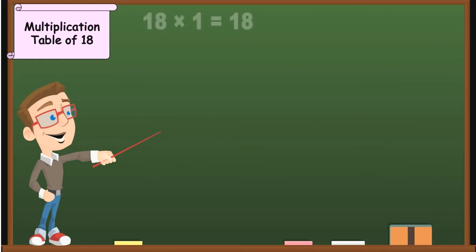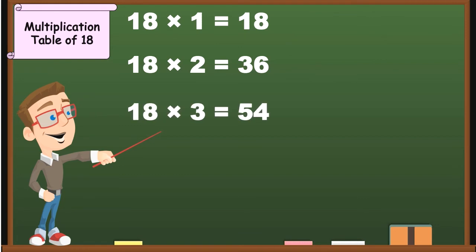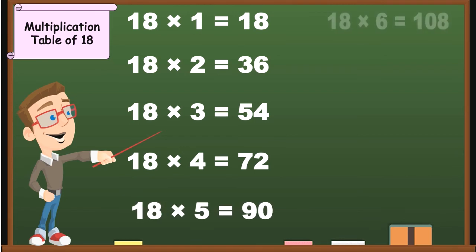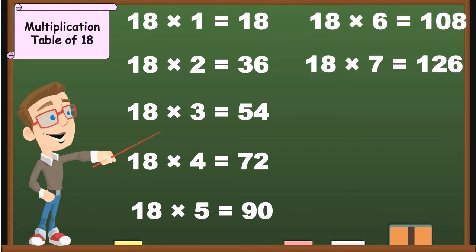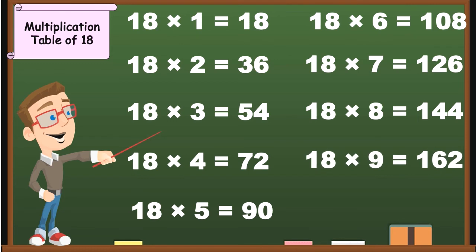18 1's are 18, 18 2's are 36, 18 3's are 54, 18 4's are 72, 18 5's are 90, 18 6's are 108, 18 7's are 126, 18 8's are 144, 18 9's are 162, 18 10's are 180.